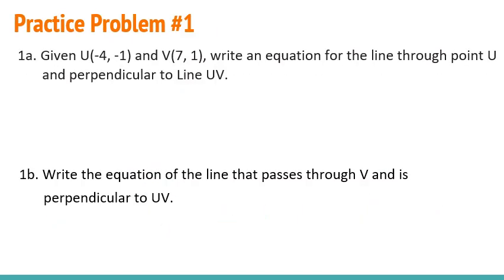Here in this one, if you feel like you're ready, you can pause it here and see if you can do this one on your own. So I'm going to jump into 1a here. So given these two points, u and v, we want an equation of a line that goes through point u and is perpendicular to line uv. We need to first figure out what's the slope of line uv. Since it's not given as an equation, it's given as two points, I can use the slope formula to figure out what the slope is.